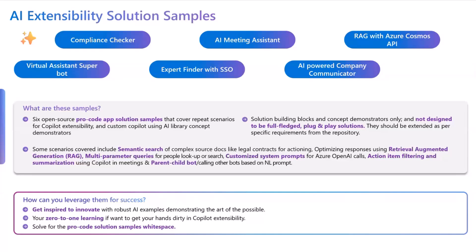Just to recap for those of you seeing these samples for the first time, what we've done as part of an internal exercise: we've come up with six different AI extensibility solution samples. We call them solution samples and not templates because we want them to be building blocks and concept demonstrators. The one that we're talking about today is the virtual assistant super bot.